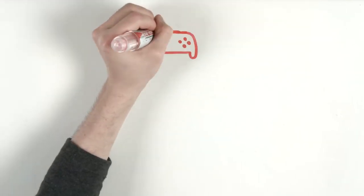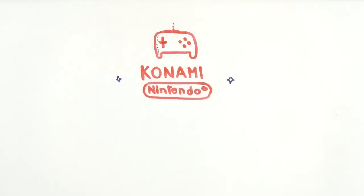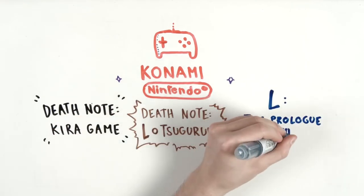A successful anime like this must have a game inspired by the story. A video game developed by Konami for the Nintendo DS was released in 2007. There are three games where the player can take on the role of Kira or an FBI detective.